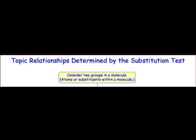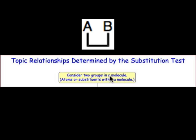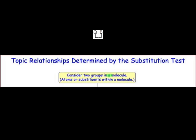There are a couple of ways we can go about doing this, and the method we're going to learn here is known as the substitution test. We start with a molecule and ask how two groups in that molecule are related to one another. We replace one group with an achiral test group, Q, and draw that structure having done that substitution.